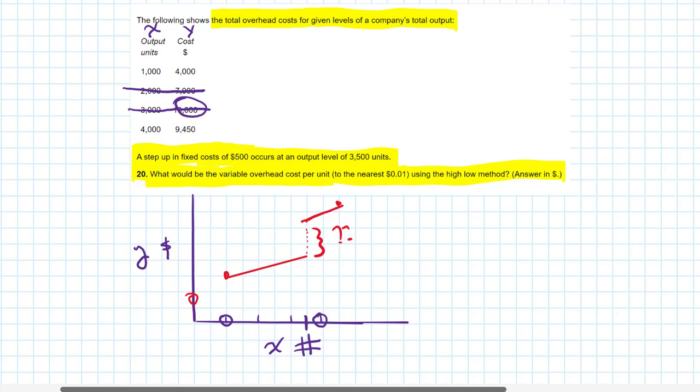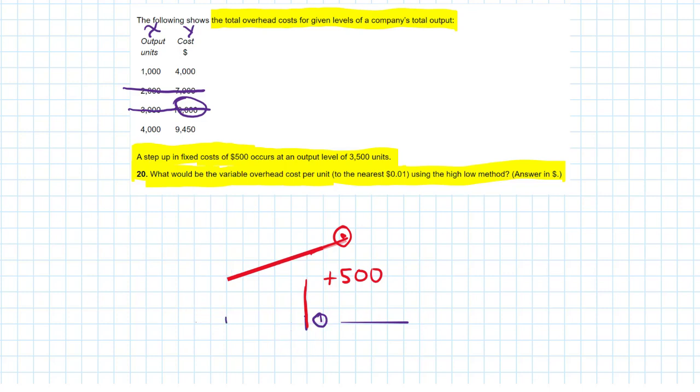The way we'll solve this problem, let's imagine that the step wasn't there. And if it wasn't there, this would be down to that, wouldn't it? The total cost above 3,500 units has the plus $500. If I remove that $500 from the high data point, we now have one straight line with which we can calculate the variable cost or the gradient. So let's get busy doing that.